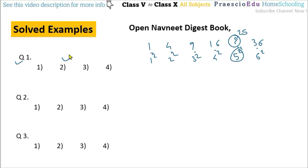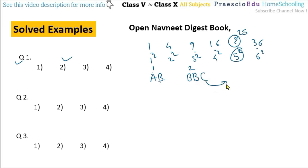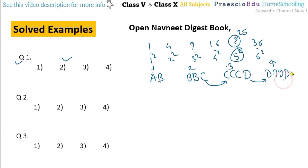Question number 2: which will be the next letter in the given pattern? In the first pattern AB is there. In the next pattern, B starts and repeats 2 times. Then C appears once, then C repeats 3 times. So D should appear 4 times, and then E appears once. So D four times and E is given in option number 3, which is correct.